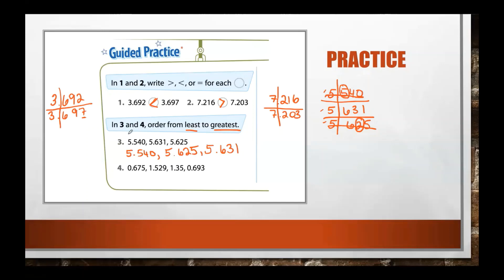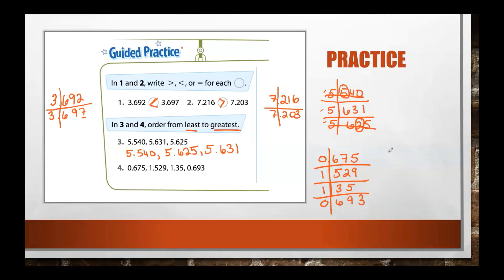Problem number four — we're again ordering from least to greatest. Writing our numbers in the chart: zero and six hundred seventy-five thousandths, drawing our line for the decimal, then one and five hundred twenty-nine thousandths, one and thirty-five hundredths, and six hundred ninety-three thousandths. Each of these has three digits, except for one and thirty-five hundredths which only has two decimal digits. Remember, adding a zero doesn't change the value of the number, but it helps you see that digits are lined up with the same number of places.